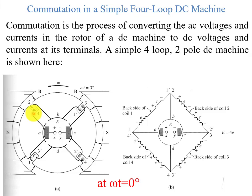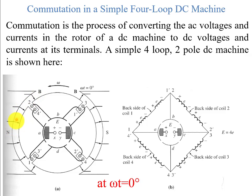The wires of loops 1, 2, 3-prime, and 4-prime are under the north pole, while 1-prime, 2-prime, 3, and 4 are under the south pole. This situation is when omega-t equals zero. The curved surface of the rotor and the poles help keep uniform magnetic flux in the air gap. Since air has high reluctance, the flux drops perpendicular to the rotor, giving uniform magnetic flux on both sides.